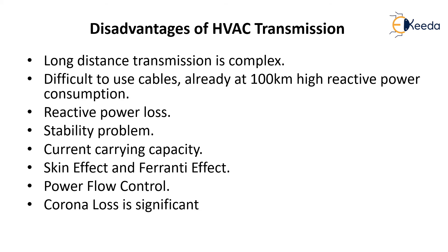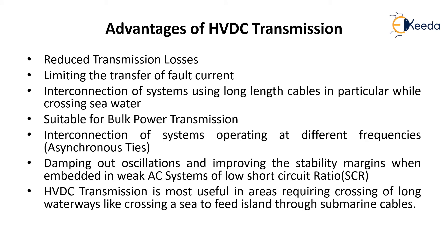Let us now look at the advantages of HVDC transmission systems. The first advantage is reduced transmission losses. In AC transmission we use at least three conductors, but in HVDC we use only two conductors — so one fewer conductor means fewer losses from that conductor alone, and all other factors also contribute to reducing overall transmission losses.